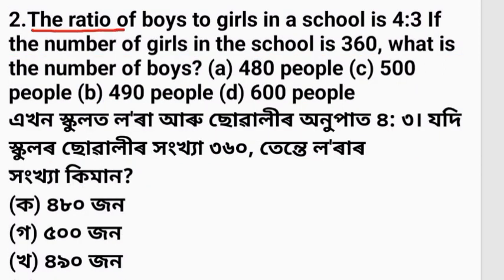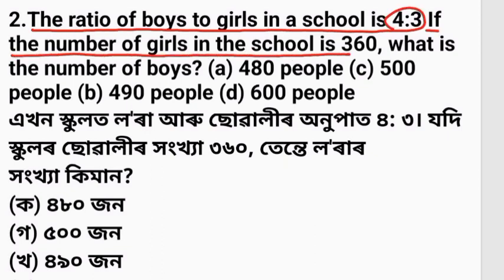The ratio of boys to girls in a school is 4 to 3. If the number of girls in the school is 360, what is the number of boys?